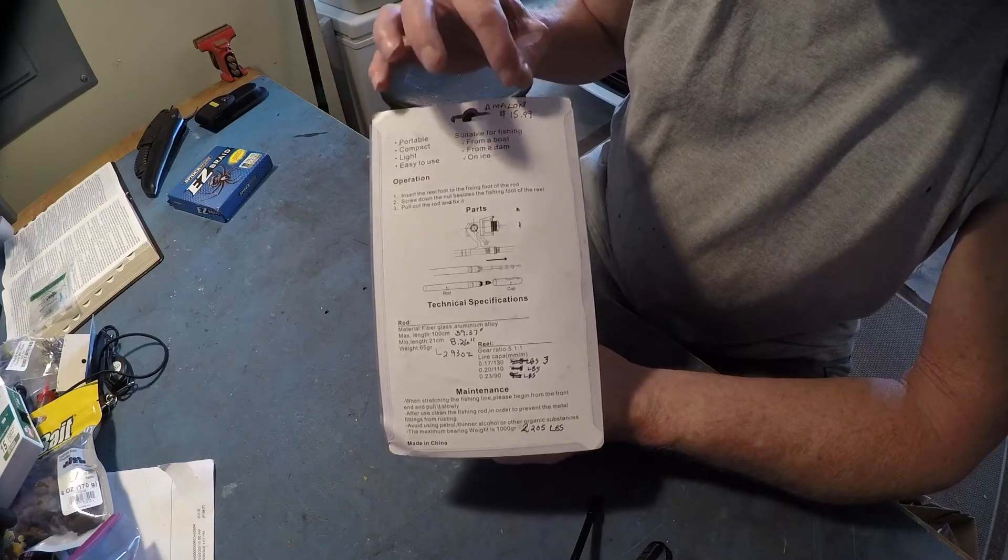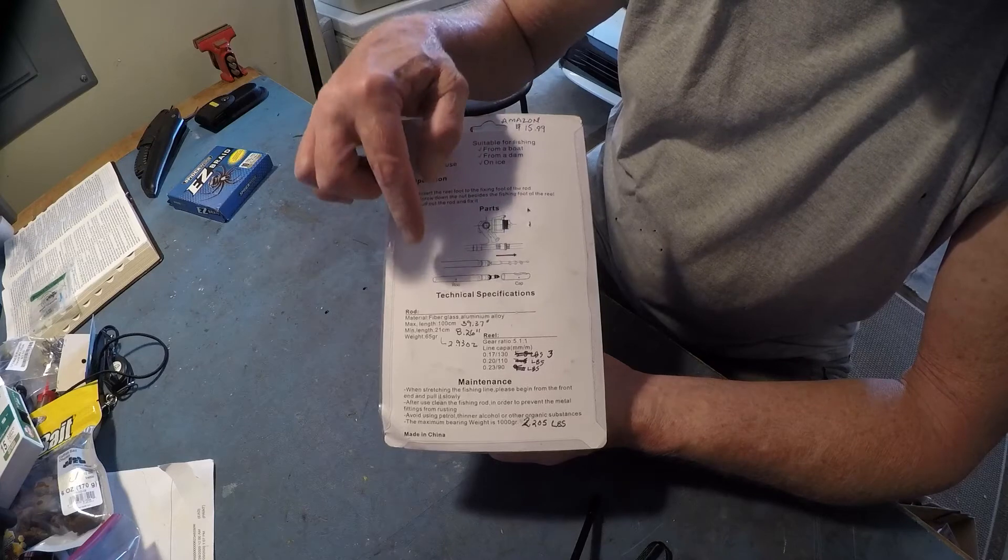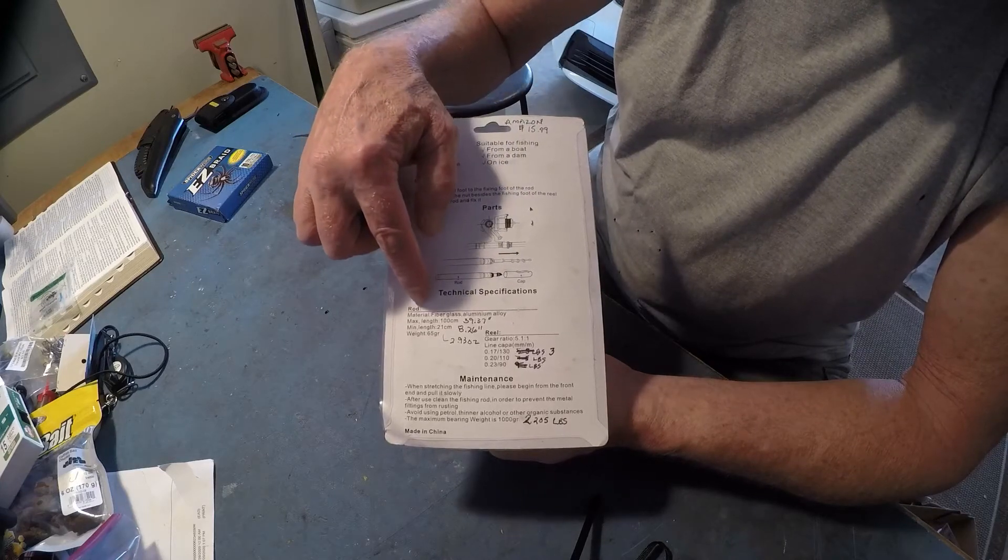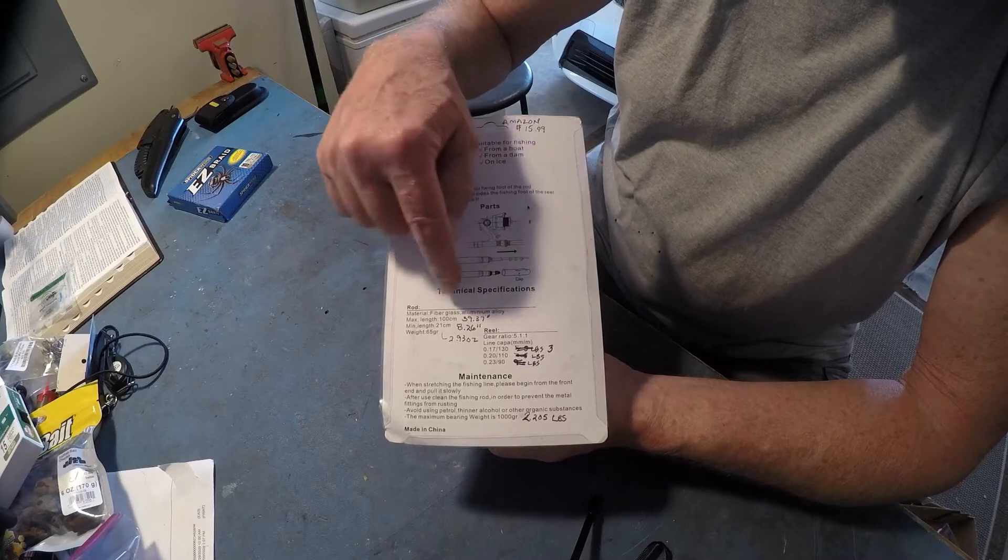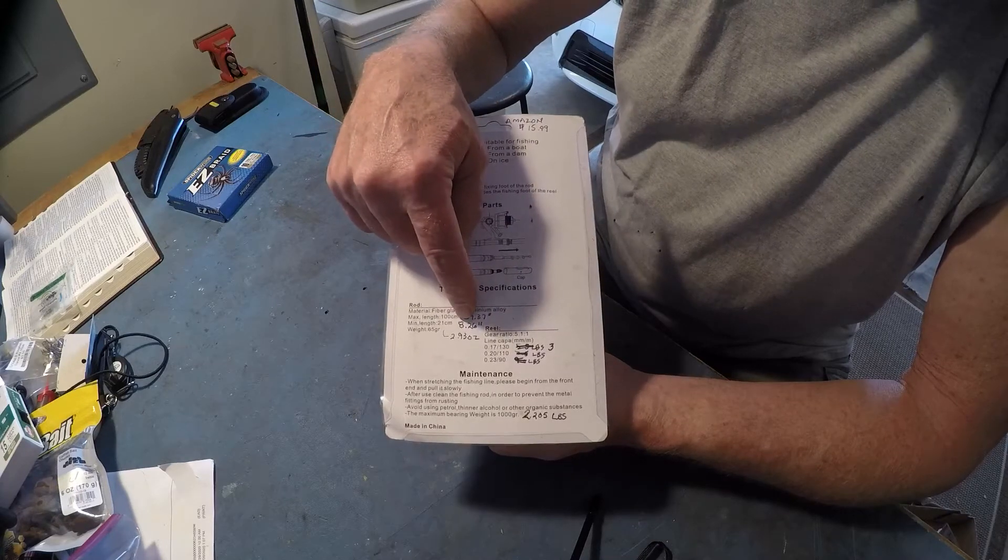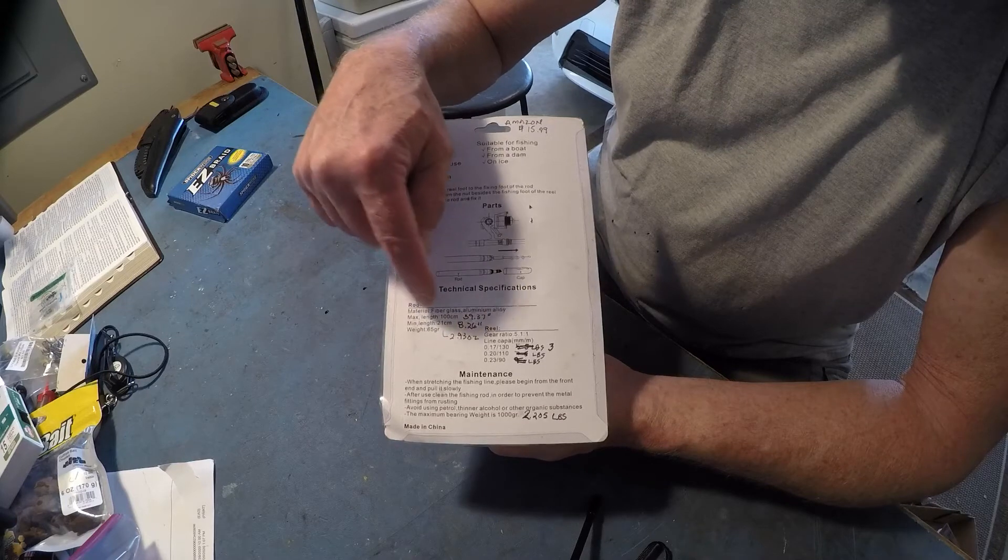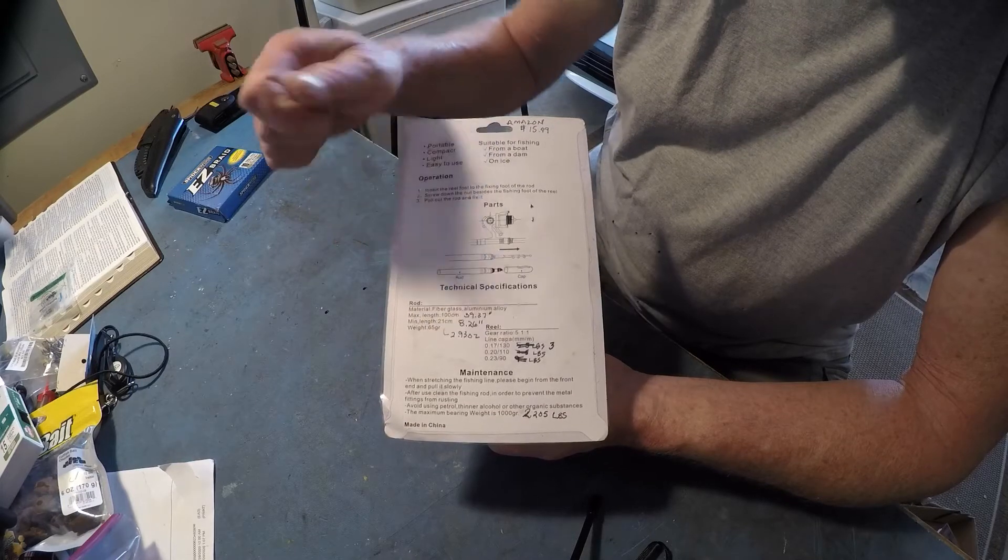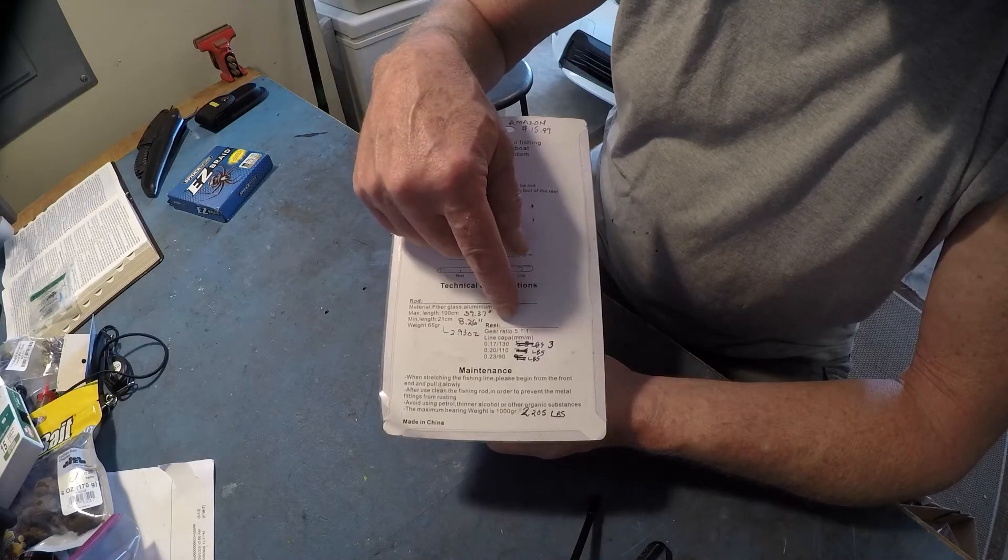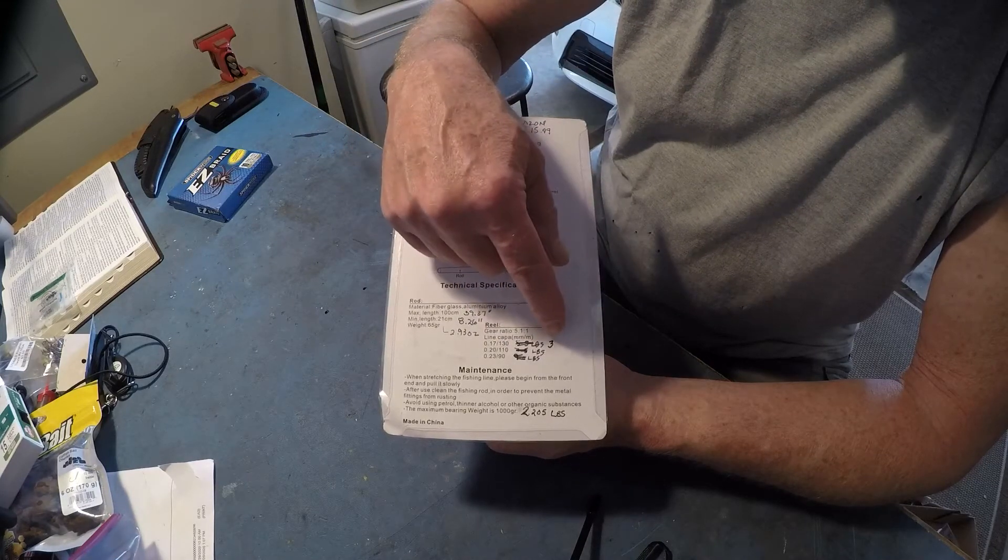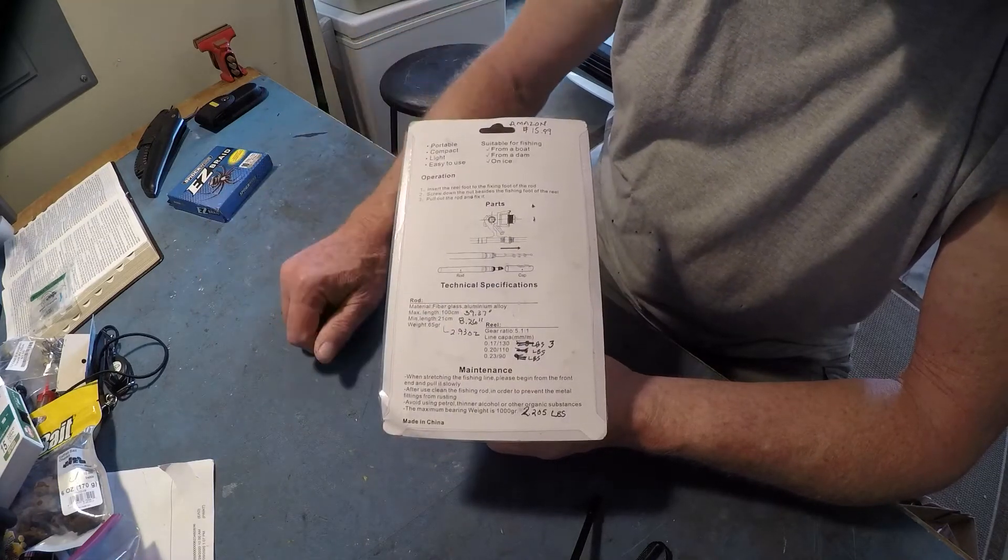There's some directions. I paid $15.99 for it, probably a little too much but here's the rod specs. It's in inches, a little over 39 inches, eight and a quarter inches when it's in the tube and the weight of the rod is almost three grams. Here's the reel specs. The 0.17 is three pounds, 0.220 and 0.23.